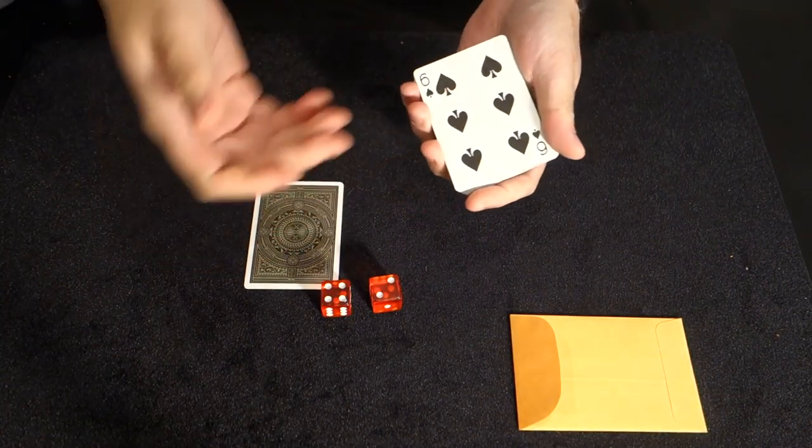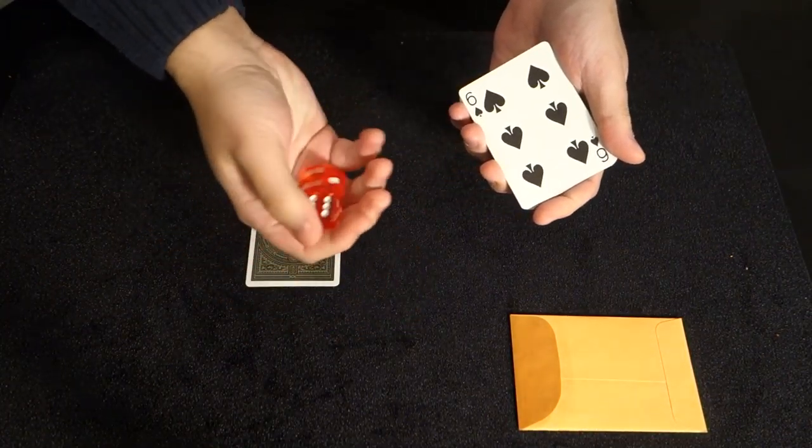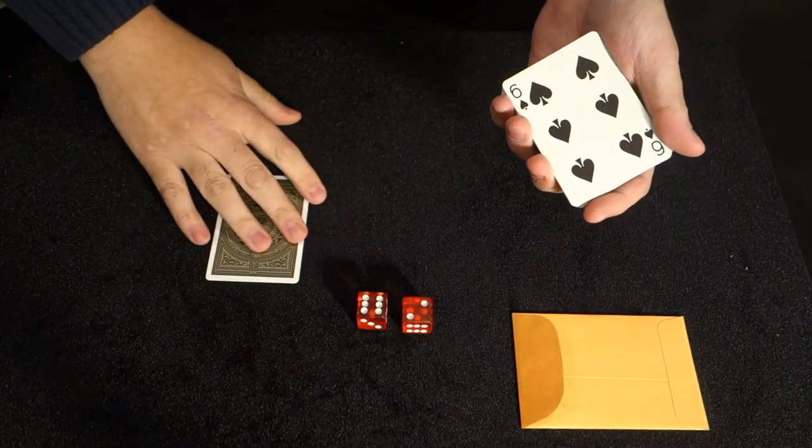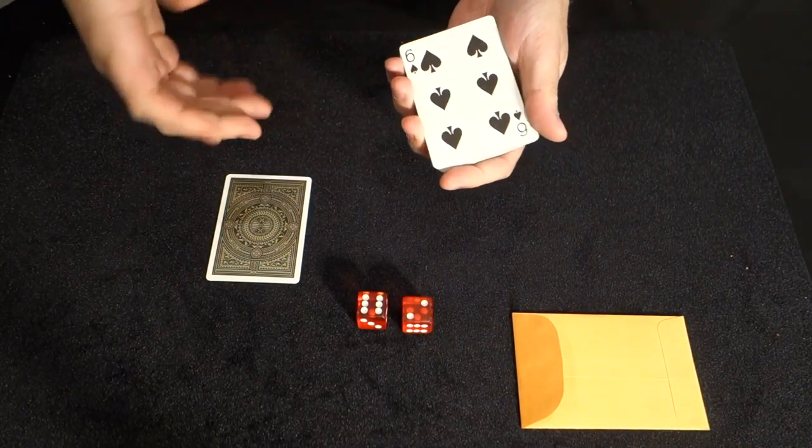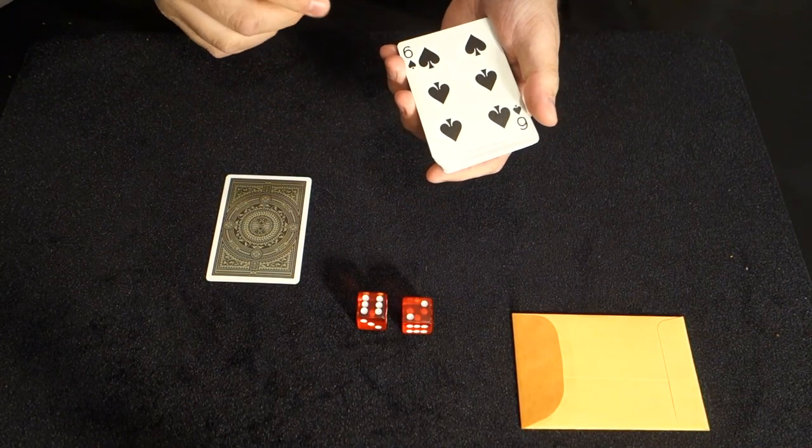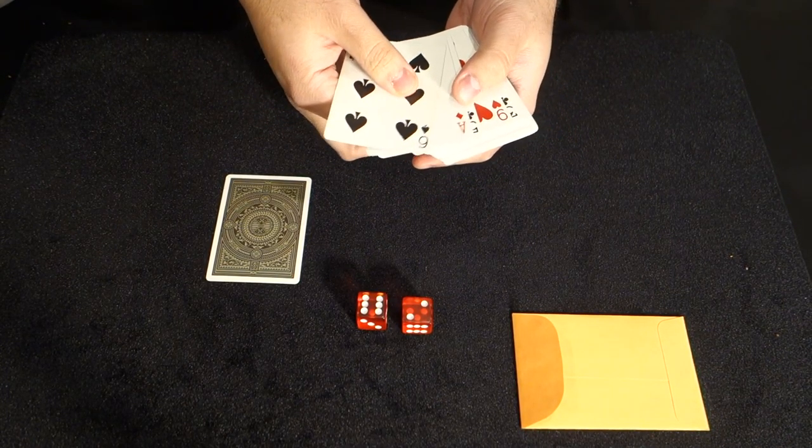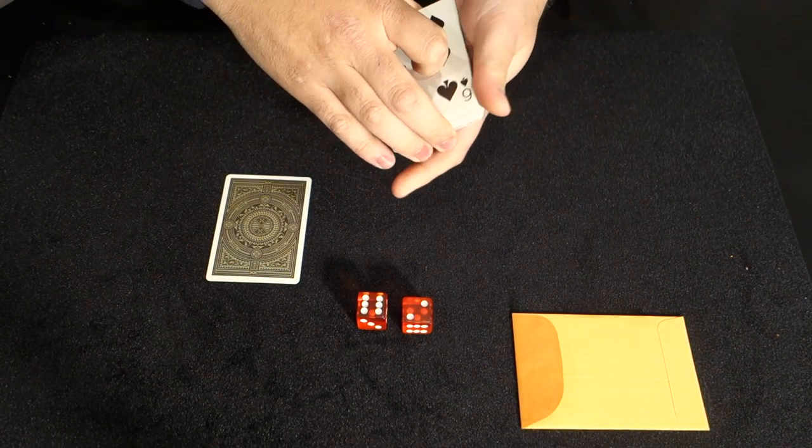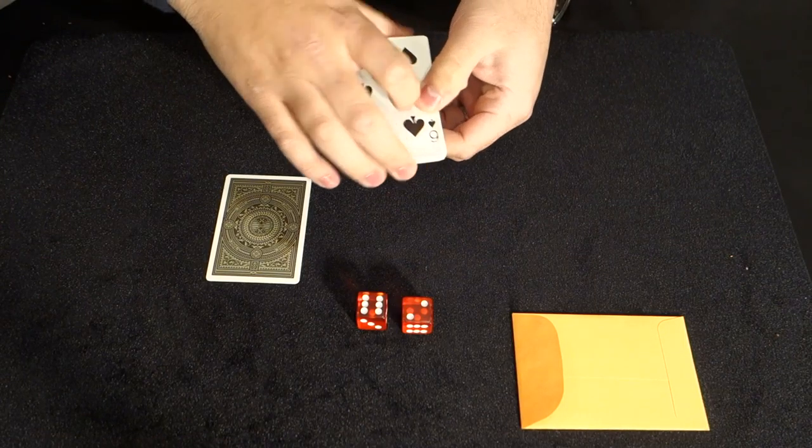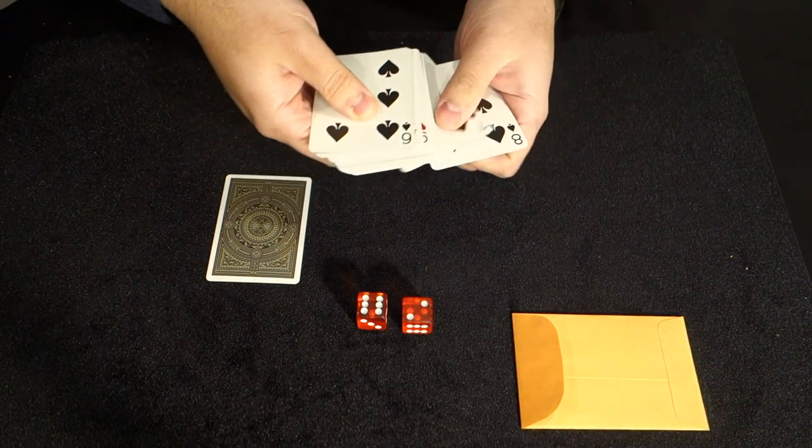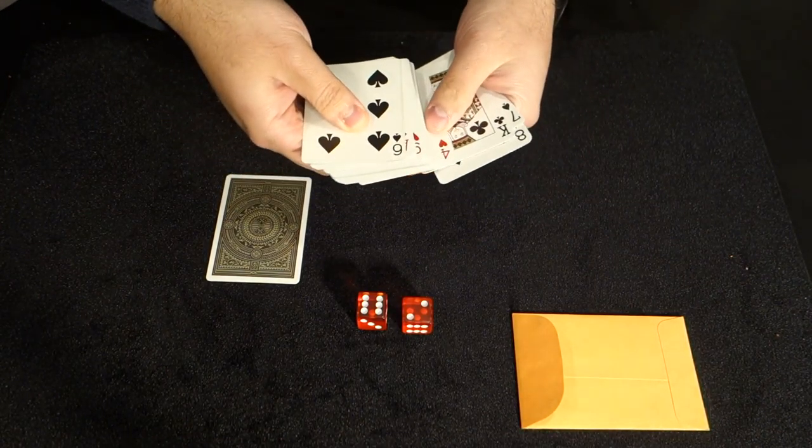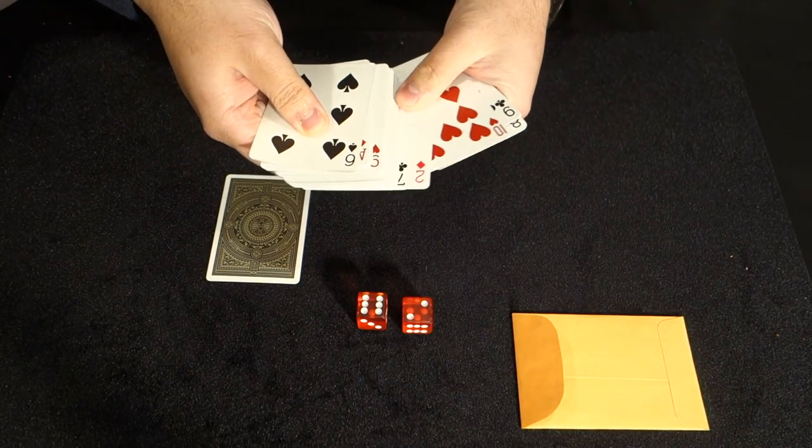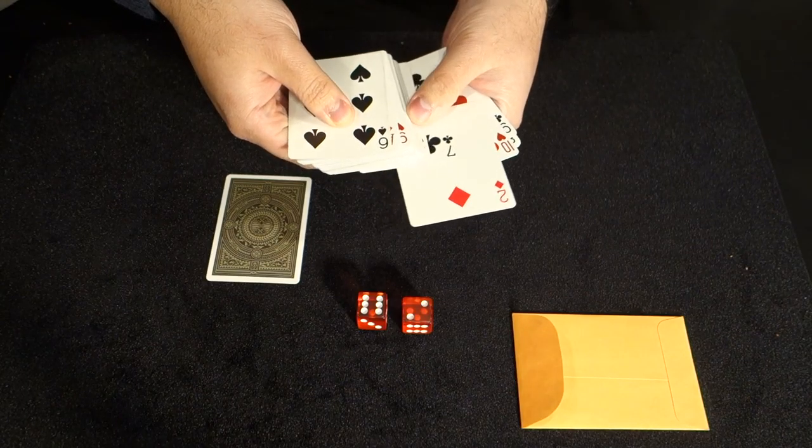Now we'll do the same for a value. So give the dice a roll, and we have an eight. And if you want, you can roll again, but let's say they go for an eight. Now again, would you like the eighth card from the top, or do you want to go for the eighth card from the bottom? Let's say they go for the bottom this time. So that'd be one, two, three, four, five, six, seven, eight. The two of diamonds.